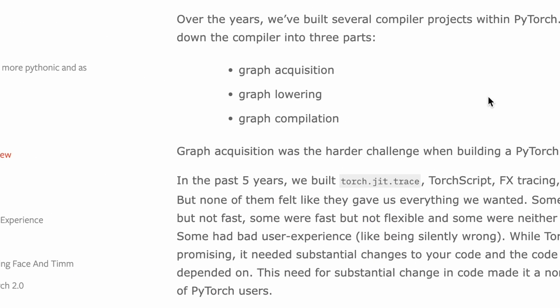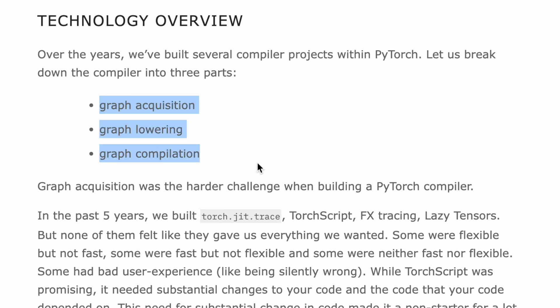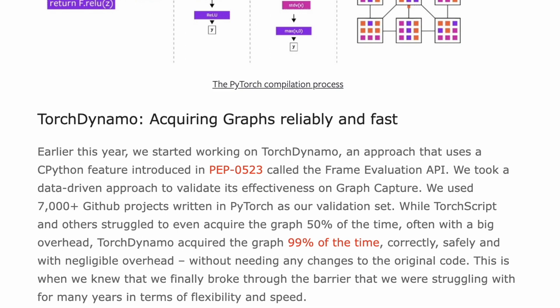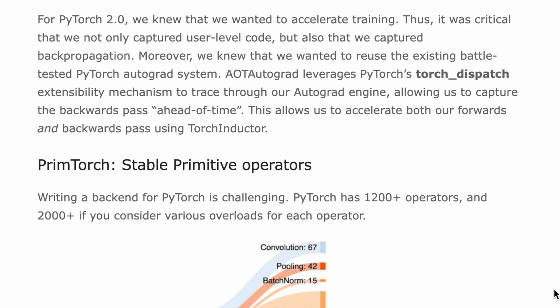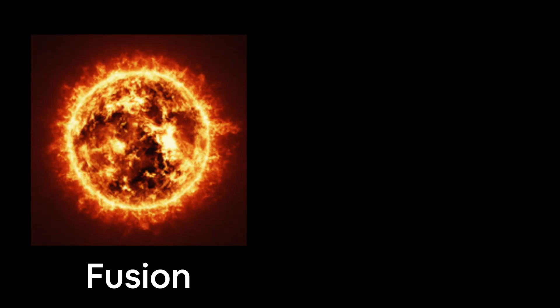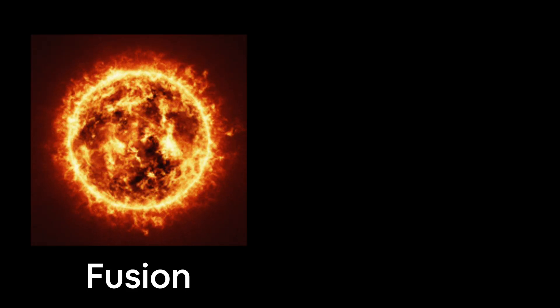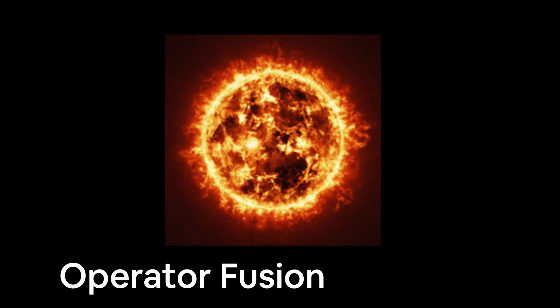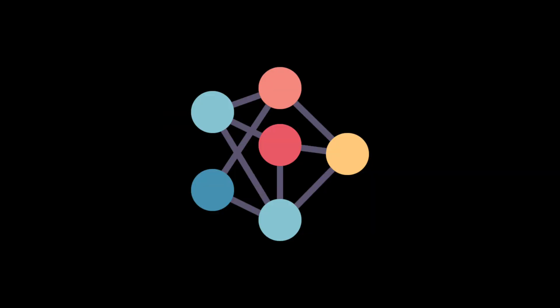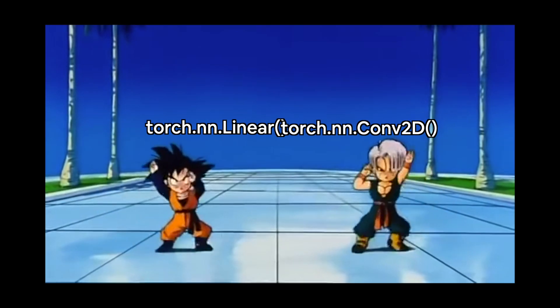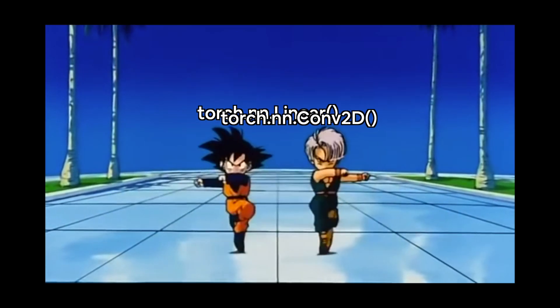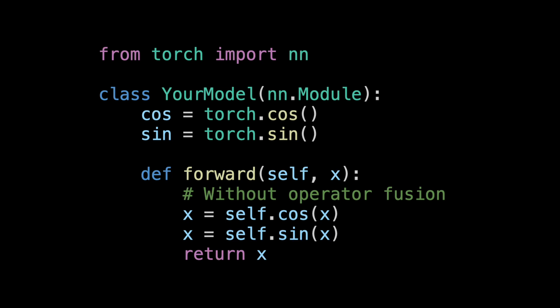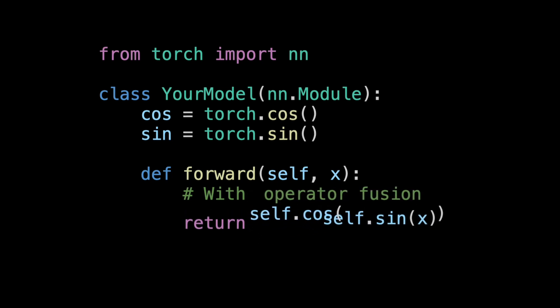The PyTorch 2.0 release notes explain these in more detail, but from a high level, the two main improvements torch.compile offers are number one, fusion, and number two, graph capture. Fusion, also known as operator fusion, is one of the best ways to make deep learning models go brrr. Operator fusion is just like fusion in Dragon Ball Z — it condenses many operations into one, or many to less.